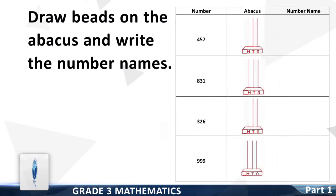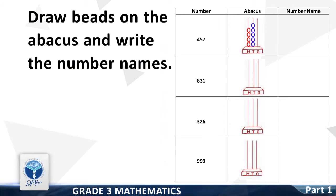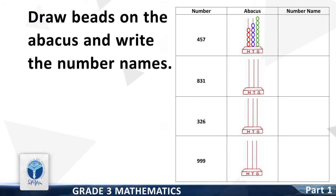Let's start from the first number, 457. Draw beads on the hundreds column — it is 4. Now draw beads on the tens column — it is 5. Now draw beads on the ones column — it is 7. Now write the number name: 457.